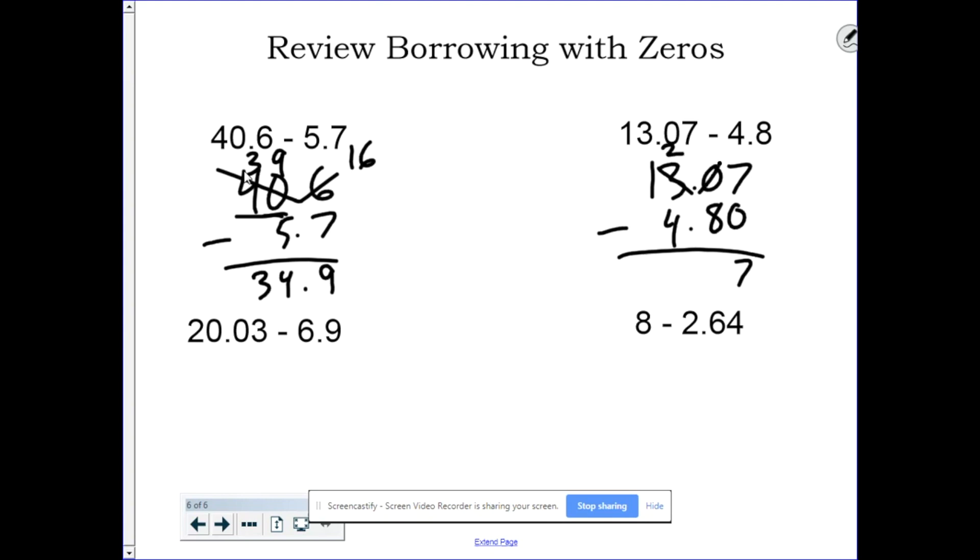The 3 becomes a 2, and the 0 becomes a 10. 10 minus 8 is 2. Uh-oh, I can't do 2 minus 4, so I need to borrow again. 1 becomes a 0. 2 becomes a 12. 12 minus 4 is 8.